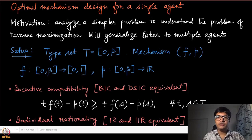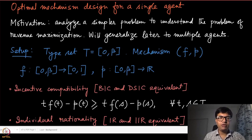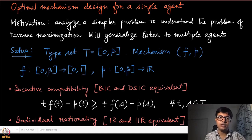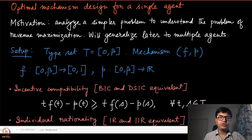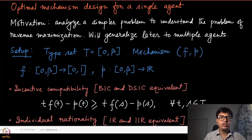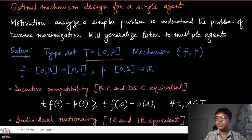Before jumping into the result of finding the optimal mechanism for any number of agents, we will first focus on the optimal mechanism design for a single agent. Assuming there is only one agent, we want to design the auction to get maximum revenue. The motivation is simple: we first want to find a solution to a simpler problem and then generalize.